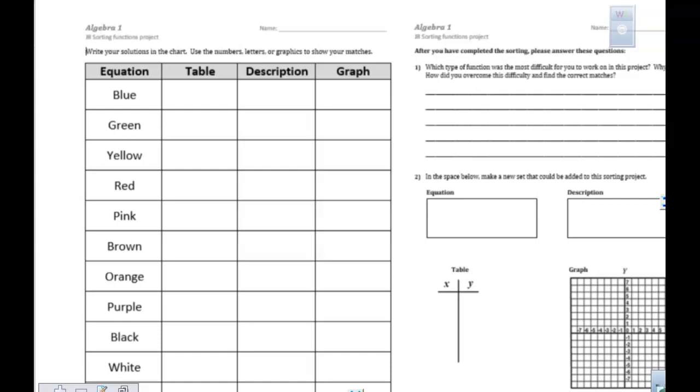This first sheet says equation, table, description, and graph. This is the front. You'll put your name on here. You're going to see all these different colors. That's the equation color, and I'll show you what it means.